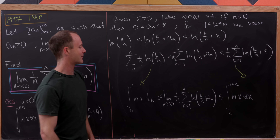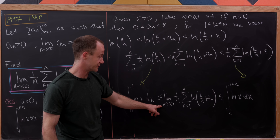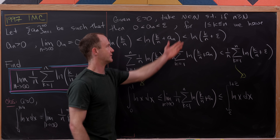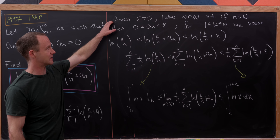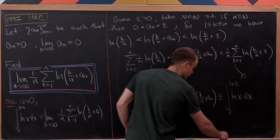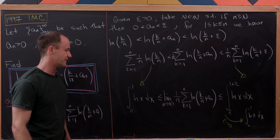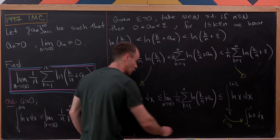This inequality holds for any epsilon greater than zero, so we can take the limit as epsilon goes to zero. As epsilon goes to zero, the right-hand side collapses to the integral from zero to one of ln(x) dx — the same as the left-hand side. We've sandwiched our goal limit between two copies of the exact same thing, so the goal limit must equal the integral from zero to one of ln(x) dx.